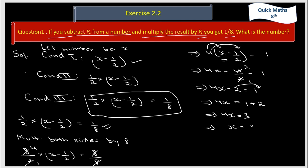x is equal to 3 by 4 — since 4 is multiplying x on the left hand side, transposing it to the right hand side gives division. So x equals 3 by 4. That is the number asked. What is the number? So x is 3 by 4. 3 by 4 is the number. Thank you.